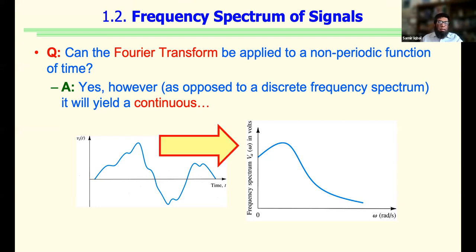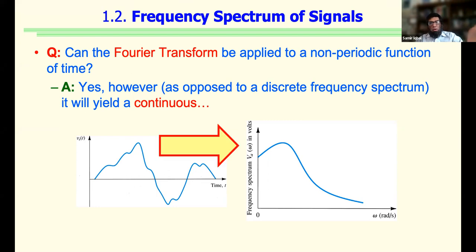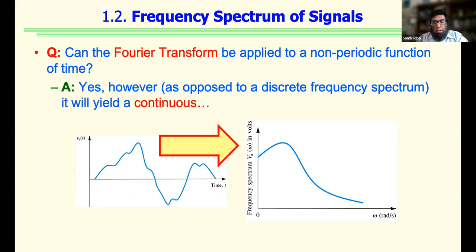We work in the frequency domain when we work with electronics because the transfer function or capability of an amplifier or circuit can be explained in terms of frequency dependence. We can have an amplifier that amplifies certain frequencies and leaves others out — we call these low-pass, high-pass, or band-pass filters.